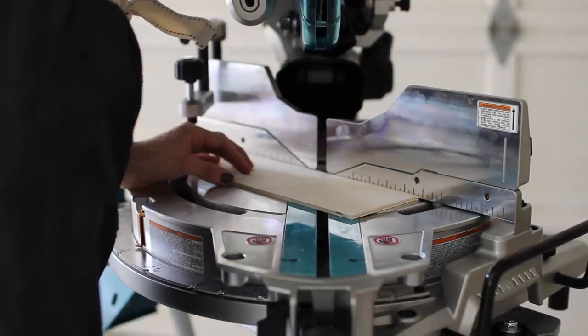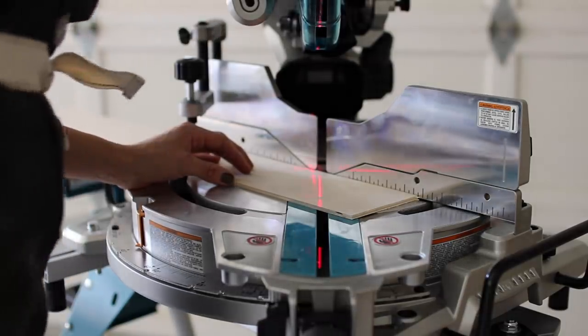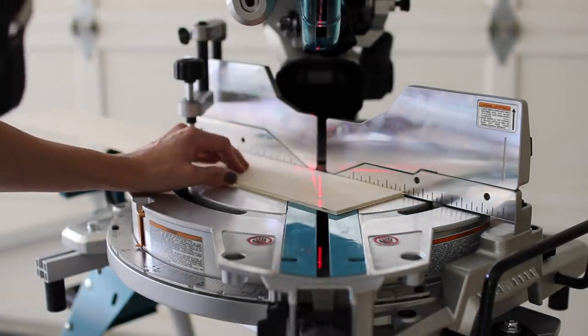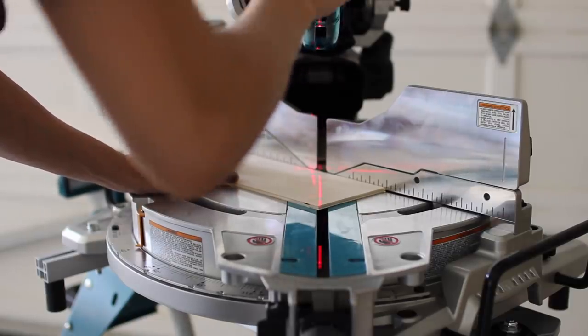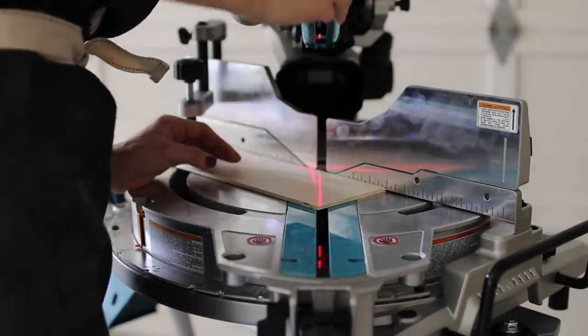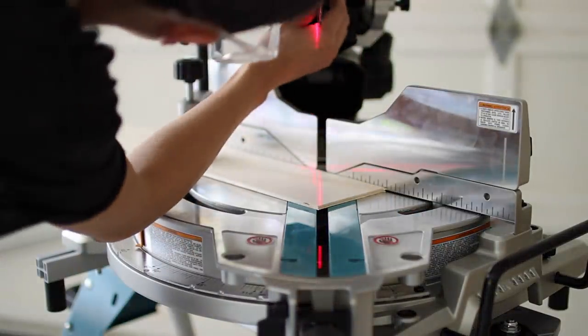When I assembled the miter saw off camera, I thought I did it correctly, but it looks like when I put the blade on I put it at an angle. I didn't realize I had to pop it in a little bit more. You'll see that the red laser is split. That is not supposed to happen, so that's what led me to realize I had the blade just tweaked a little bit.